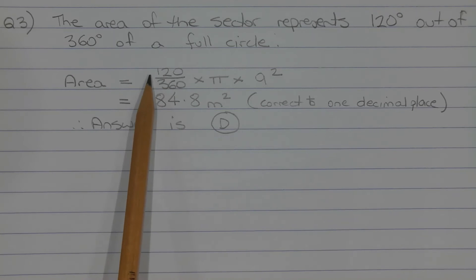So the area is equal to 120 over 360 times pi times the radius squared, and in this case the radius is 9 metres.